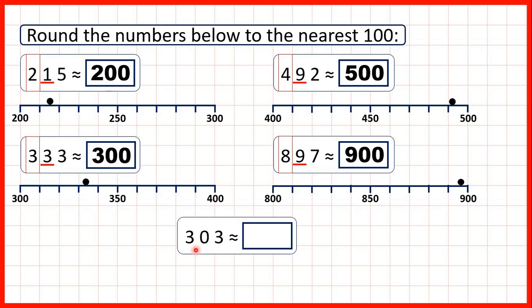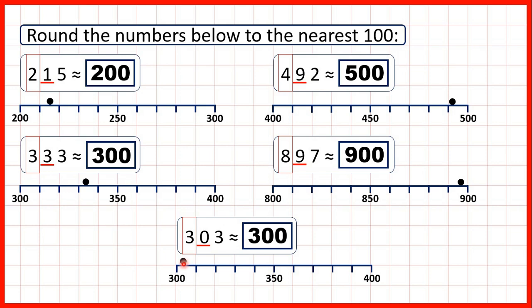Finally, we have 303. We find our hundreds and look to the right — we have a 0 in our tens. If it's 4 or less, like it is here, we round down, which means the digit we're rounding to stays the same. So we have 300. On a number line, we can see 303 is much closer to 300 than it is to 400, the next multiple of 100, so that's why we round down.